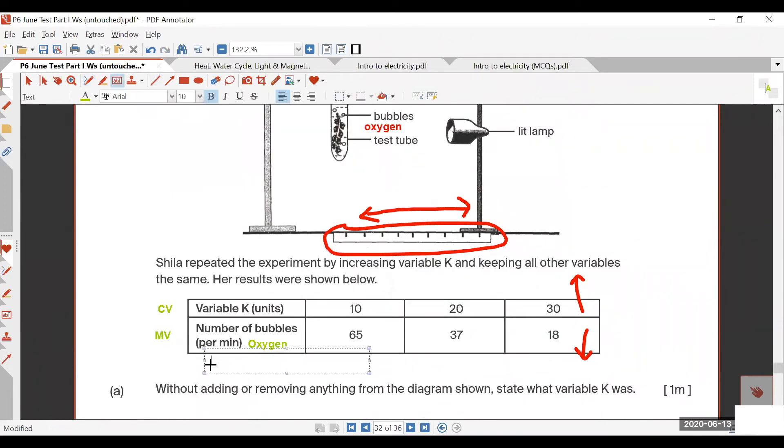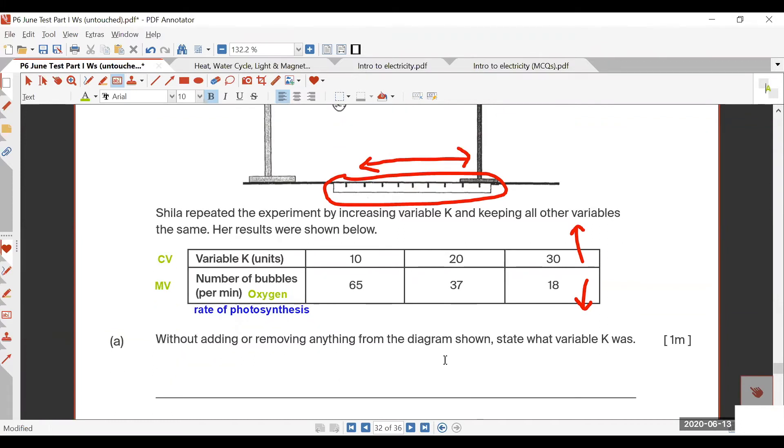This number of bubbles produced per minute is rate of photosynthesis. How do I know when to use rates? Whenever you see time involved. In this question, you're measuring the number of bubbles produced per minute. So it's time. You know it's going to do with rates, how fast photosynthesis happens.